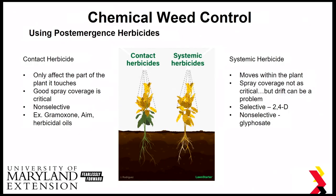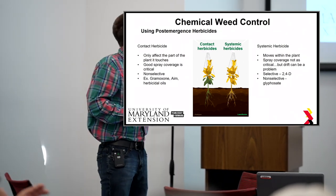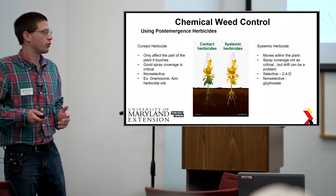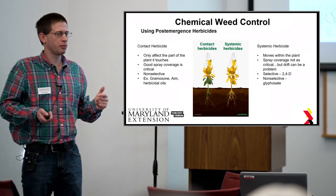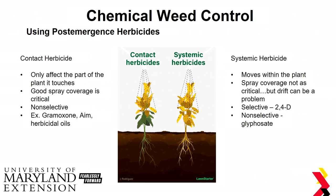Looking at post-emergence herbicides: two important types are contact herbicides and systemic herbicides. Contact herbicides only affect the part of the plant they touch — good for annual weeds, not so good for biennial and perennial weeds, and spray coverage is critical. Most contact herbicides are non-selective, including organic herbicides such as Gramoxone, AIM, and herbicidal oils. Systemic herbicides move throughout the plant, so spray coverage is less critical. Systemic herbicides come in two more types: selective ones like 2,4-D that only control broadleaf weeds, and non-selective ones like glyphosate.